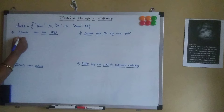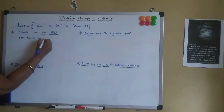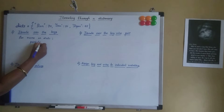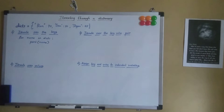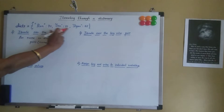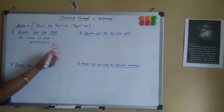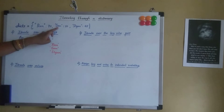For the first method, to get the keys from the dictionary — ram, sam, and sham — we use a for loop: `for name in dict1: print(name)`. Here `name` is the iterating variable. When we iterate over dict1 without specifying anything, by default it gives only the keys: ram, sam, and sham.